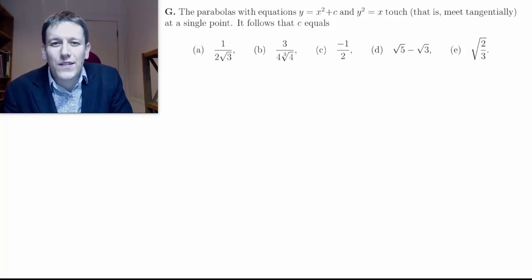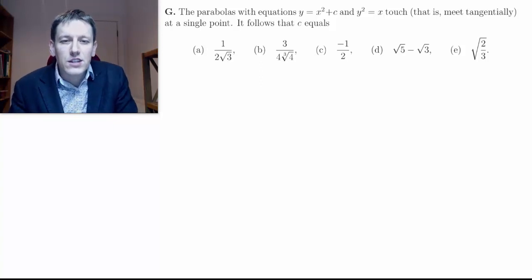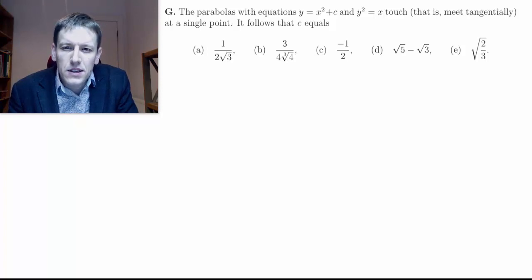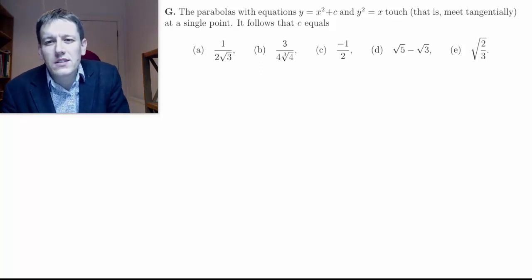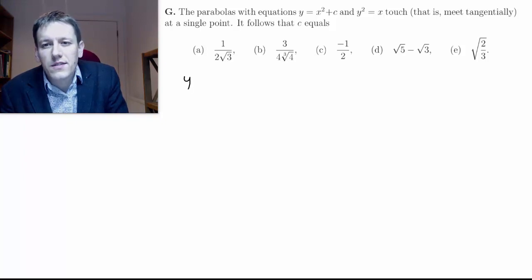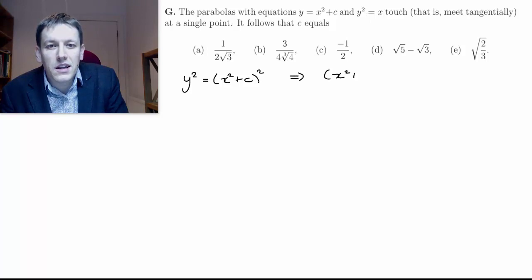To find where the curves intersect, our initial thought should be to try and solve these simultaneously. But one has y and x², the other has y² and x, so either way we're going to end up with a slightly awkward thing. Let's give it a go. Maybe I take the first one and write y² = (x² + c)², and then the second equation is y² = x, so that would lead me to want to look at (x² + c)² = x.